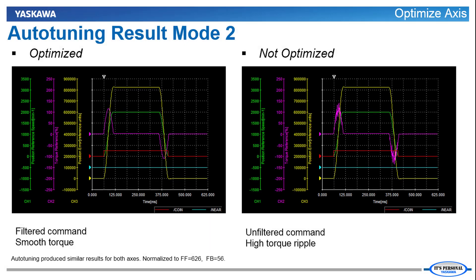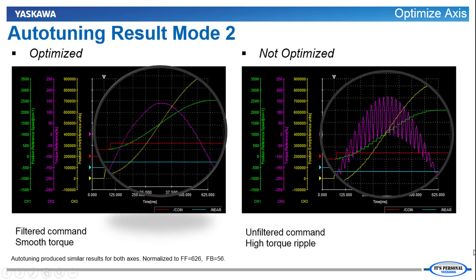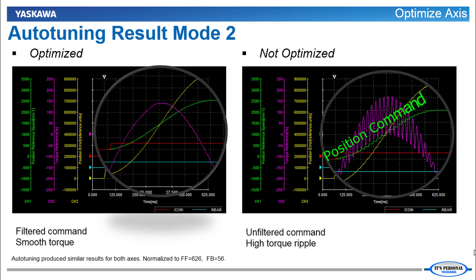But here's the result after auto-tuning using mode 2, designed for point-to-point positioning. You can see that the basic response is still the same in terms of position error and settling time. Looking closer, the optimized axis has virtually no torque ripple, but the other axis has very high torque ripple. This is because the command is not filtered and the controller feedforward is still applied at the Mechatrolink cycle. You can even see that stair-step appearance in the command every 2 milliseconds corresponding to the Mechatrolink cycle.